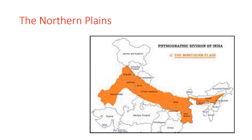The Indo-Gangetic Plains are also known as the Northern Plains or the North Indian River Plains. They are a large and fertile plain surrounding most of Northern and Eastern India. The Northern Plains of India are one of the most fertile plains of the world. These plains lie between the Himalayas and the Southern Plateau, fed by numerous rivers and the fertile alluvium deposited across the region by the two river systems.